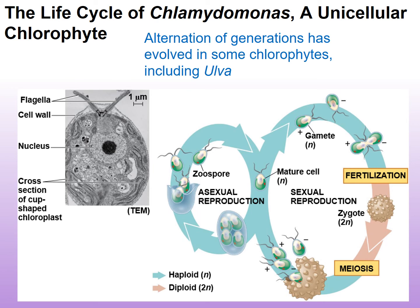Let's look at the life cycle of chlamydomonas, which is an example of a green alga — it is a unicellular chlorophyte. The alternation of generations evolved within some of the chlorophytes, including ulva. However, we're going to talk about the unicellular chlamydomonas. Chlamydomonas can reproduce asexually and sexually. In asexual reproduction, a mature cell divides to produce zoospores that become mature cells over time. This is a continuous cycle, and all offspring are essentially genetically identical.